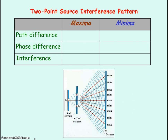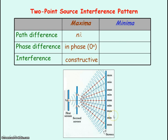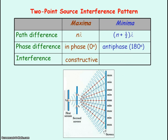The bright fringes, representing maximum intensity or maxima, occur when the light from S1 and S2 have a path difference equal to a whole number of wavelengths. The waves are then meeting in phase, giving constructive interference. The dark fringes, representing minimum intensity or minima, occur when the path difference equals N plus a half lambda — that additional half-wavelength difference means the light meets in antiphase, a 180-degree phase difference, causing destructive interference and cancelling out to produce darkness.